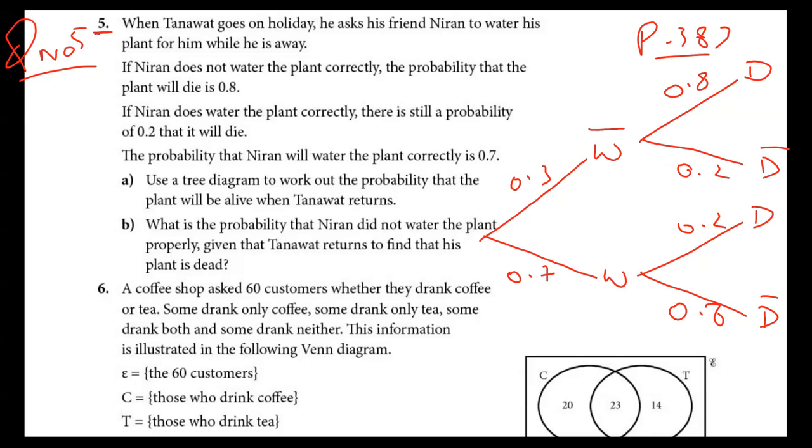After this, he's asking use a tree diagram to work out probability that the plant will be alive, not die. So not die means this is not die. Some students by mistake write this branch only. No, no. Because die or not die depend upon the watering. Water plant properly. So it means this answer, this branch, and this branch, because he said not die.